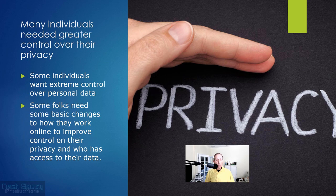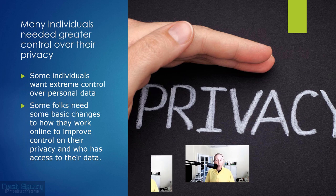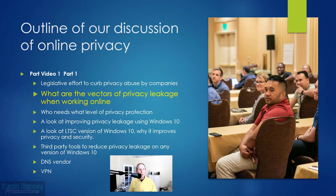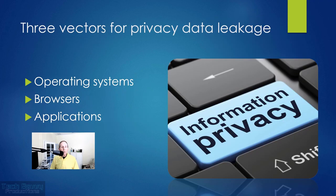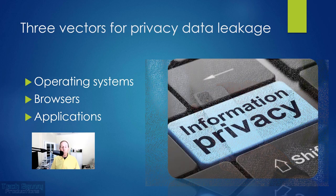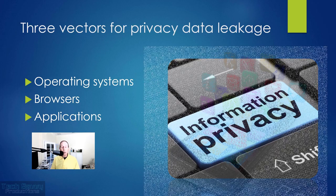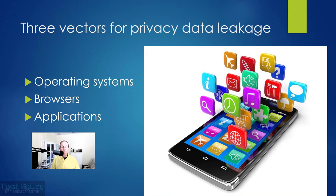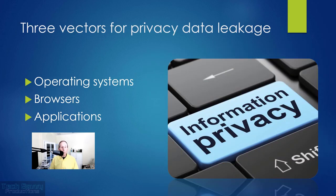Some individuals need greater control over their privacy than others — some need an extreme amount, some need just basic changes to how they work online. The three key vectors of privacy data leakage when working online are operating systems — including mobile phones as well as laptops and PCs — browsers, which are a big concern, and especially on the mobile side, applications, which can be an extreme form of data and privacy leakage on your mobile phone.